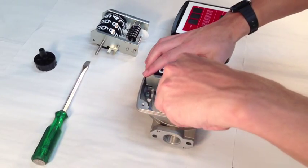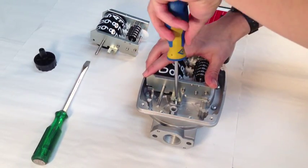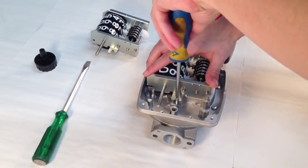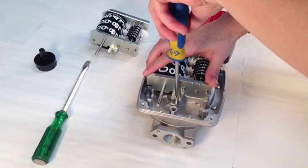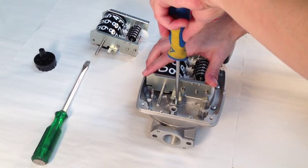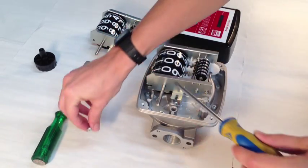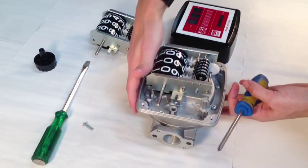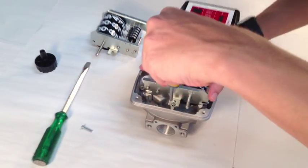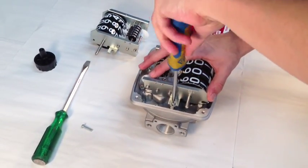Using the crosshead screwdriver, completely remove the left hand screw. Then loosen the right hand side screw sufficiently to allow the counter assembly to be lifted out of place.